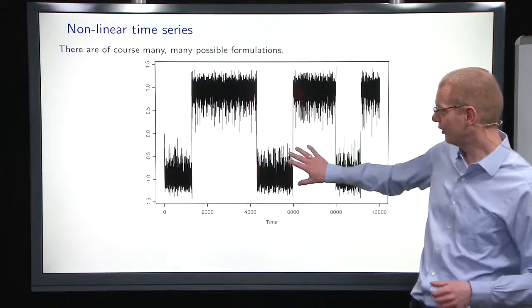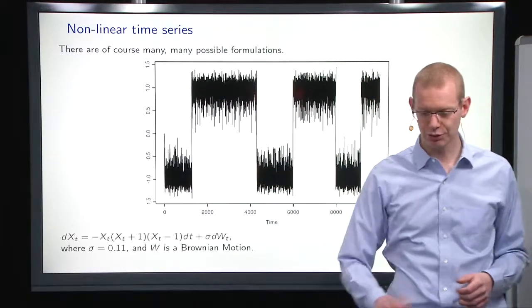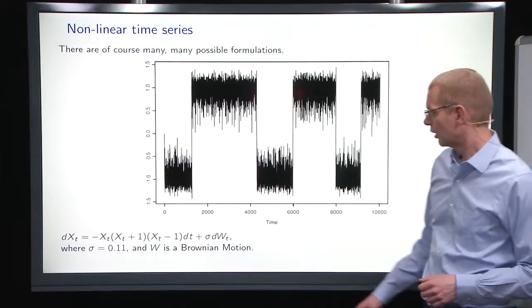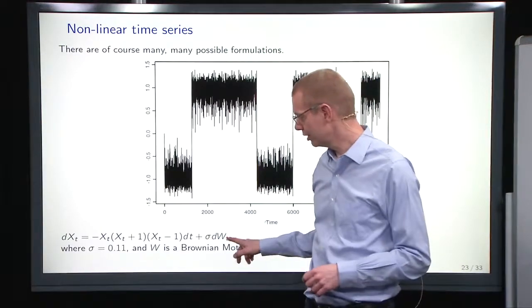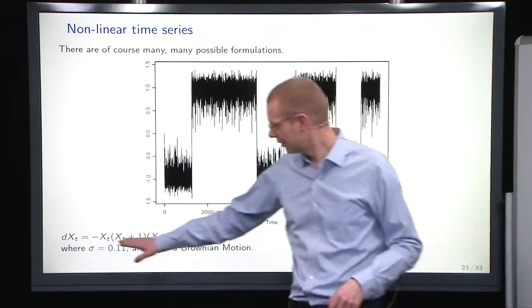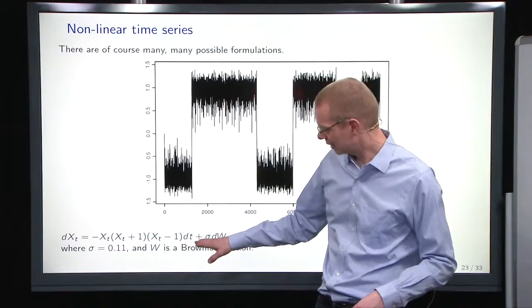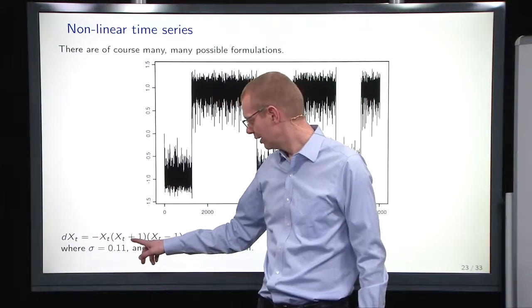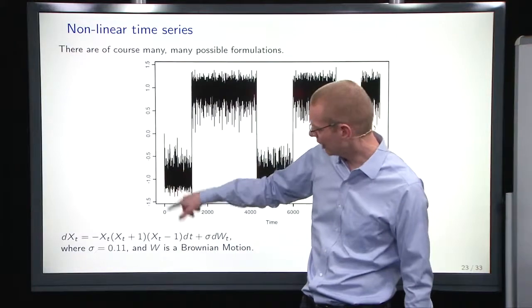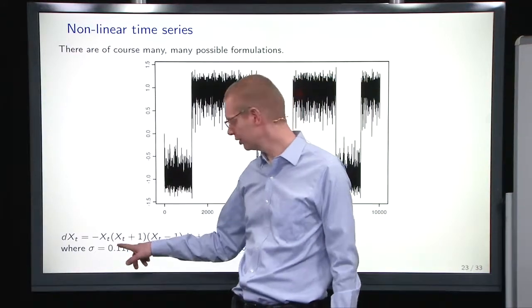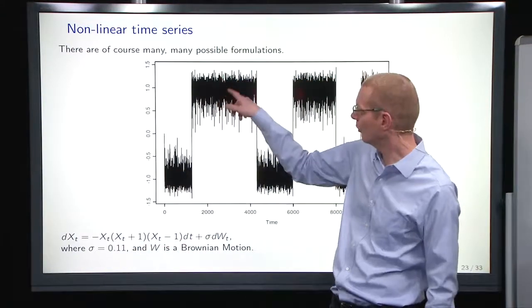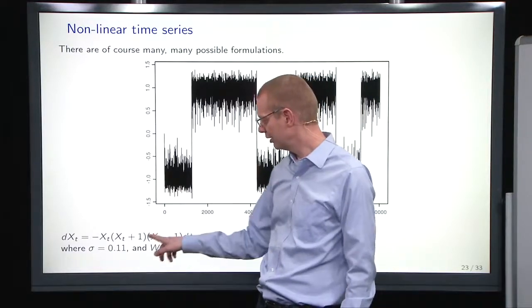Let's just look at this realization here of a process. I'll show you the process down here. We have a so-called Brownian motion here, and then we have an equation part down here where it says, well, if xt is close to minus one, this is very close to zero, this part, or if it's close to one up here, then this is very close to zero.